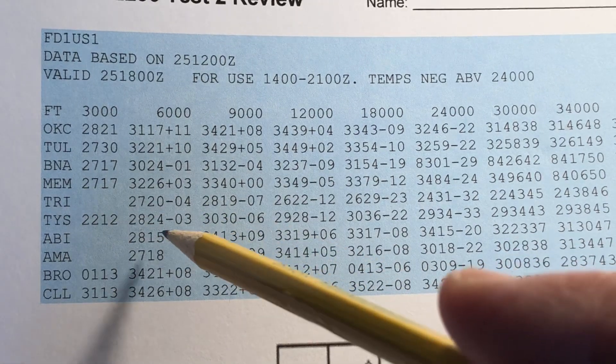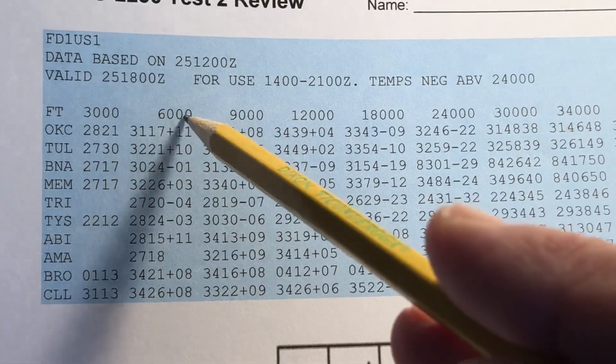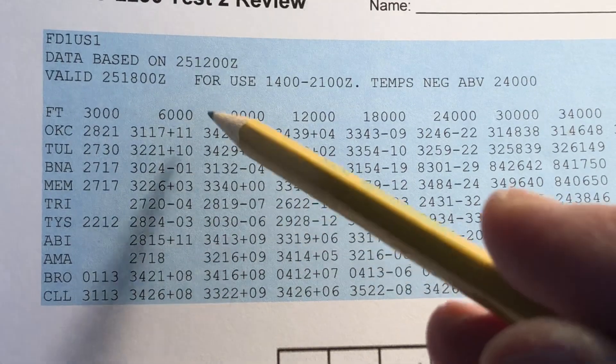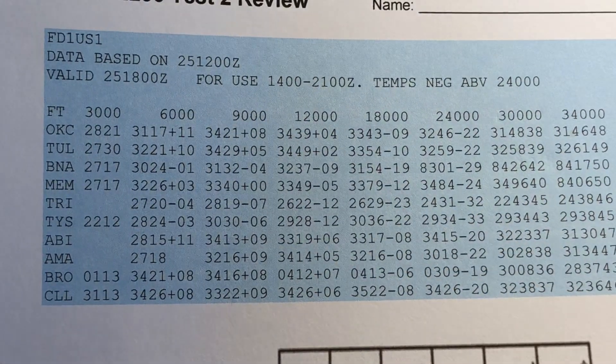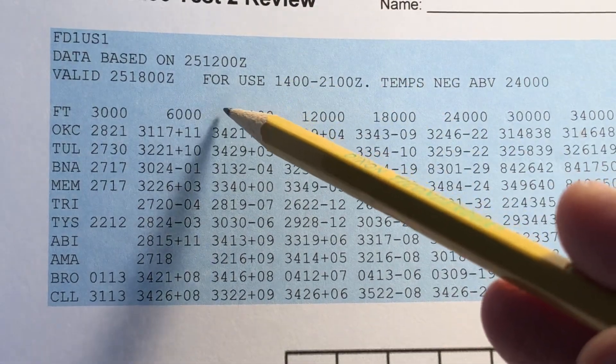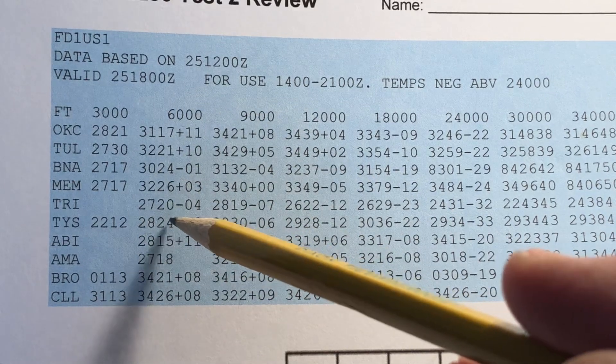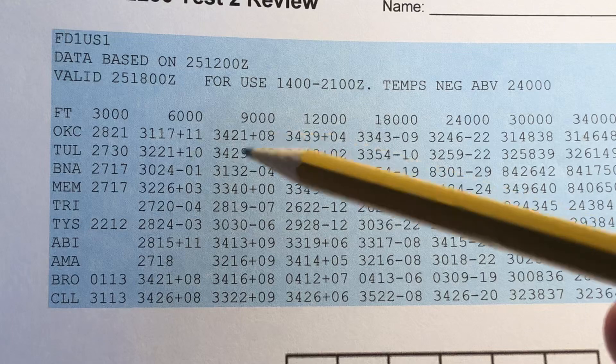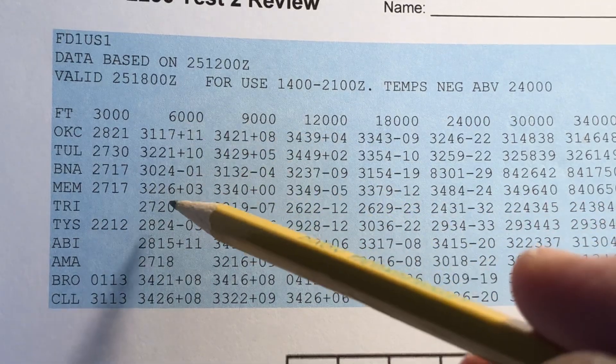So let's look at the winds at 6,000. We have winds at 6,000, we have winds at 9,000. Notice we don't have winds at 7,500, which is our cruising altitude. So what we're going to do is interpolate between the winds at 6,000 and the winds at 9,000.